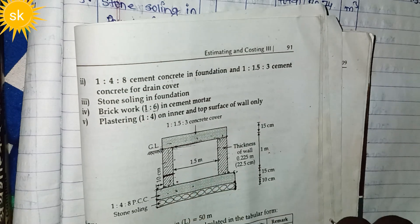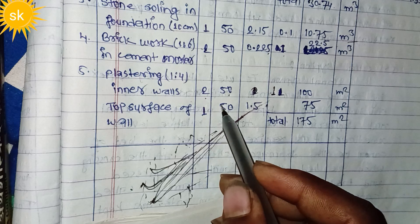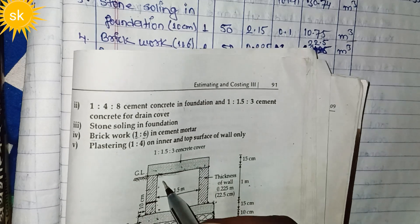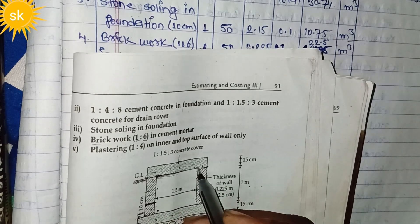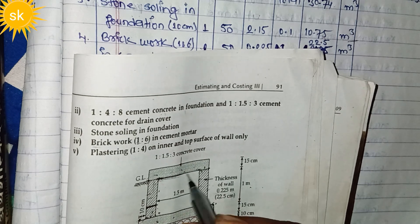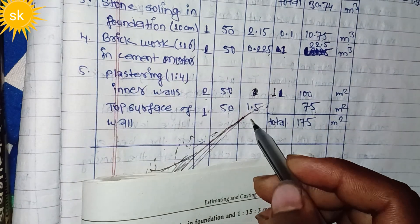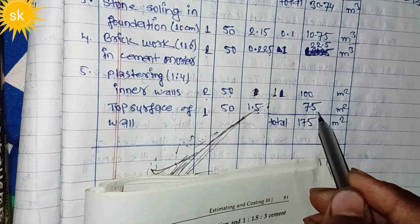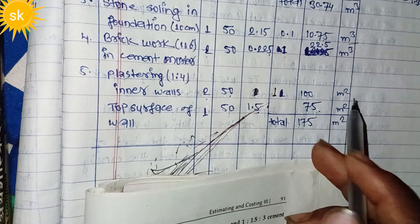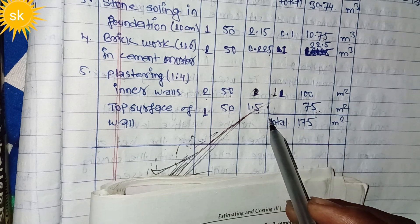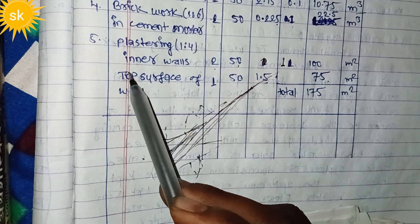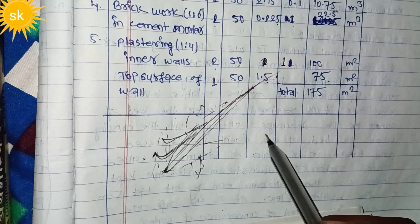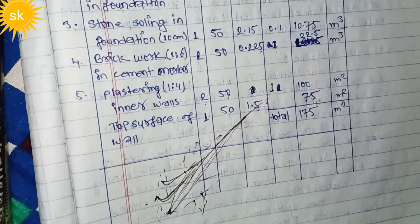The length is 50 meters. The width for the plaster is 1.5 meters — 1.5 meters. And the length is 50 meters. The width for plaster work is 1.5 meters. Total plaster work: inner wall and top plaster work — it is simple to calculate like this.